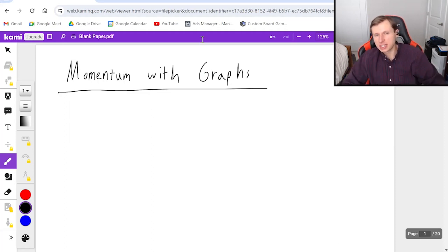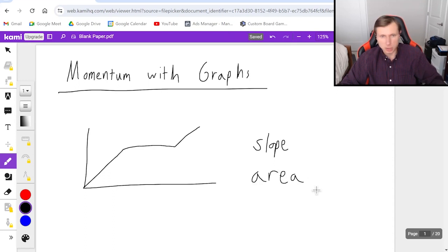So the first piece of advice I can give you is that whenever they give us a graph in physics, like any graph, let's say one that looks like this, then we are either going to be finding the slope of the graph at a specific point or the area of the graph between two points. The way we know which one to use depends on the equation.